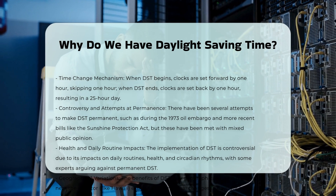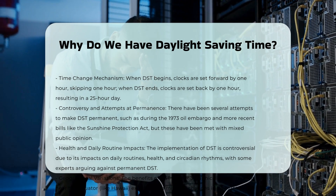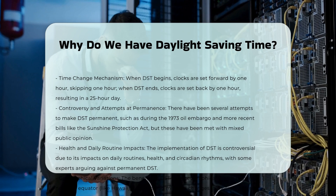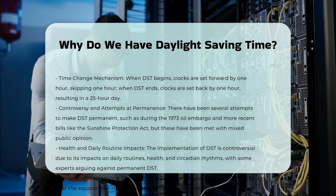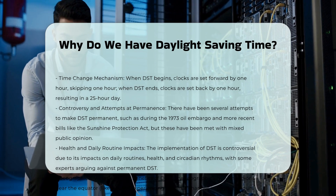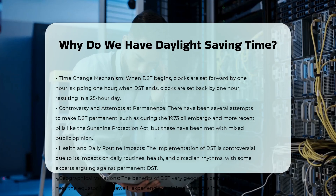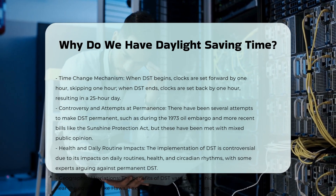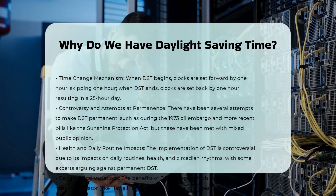How Daylight Saving Time works: When DST begins, clocks are set forward by one hour, typically at 2 a.m. local time, skipping the hour from 2 to 2:59. This results in a 23-hour day. Conversely, when DST ends, clocks are set back by one hour, resulting in a 25-hour day, with the hour between 1 and 2 occurring twice.